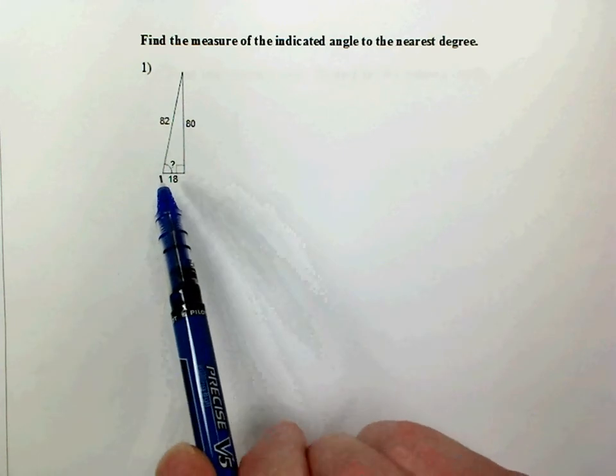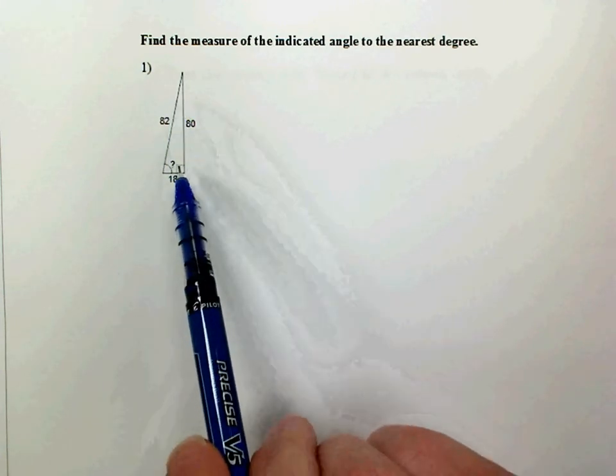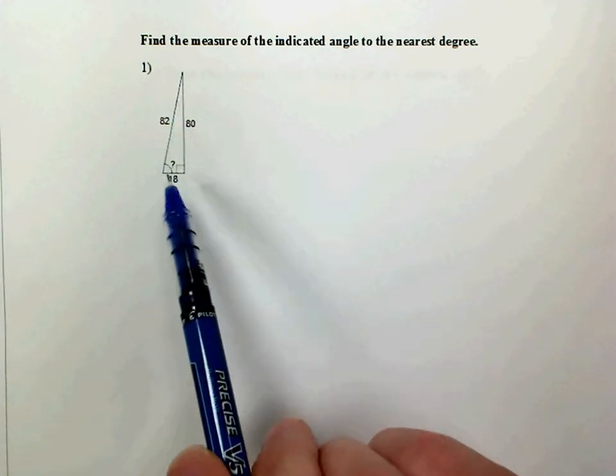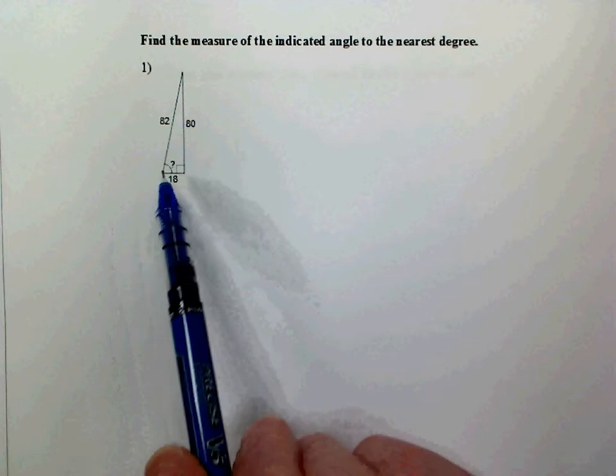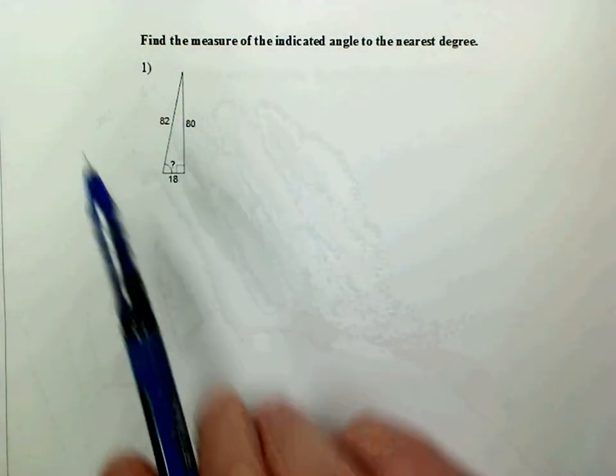So we can't use the triangle sum theorem, knowing that these add to 180 since we only know one angle. We do know that these two have to add up to be 90 degrees, since this one's 90 degrees, but we don't know what one of them is to be able to find the other. So this is a trig problem.